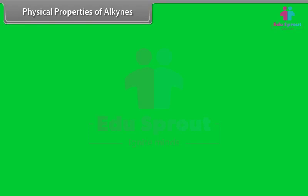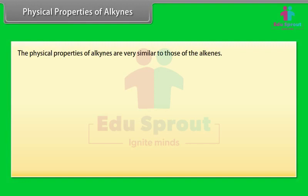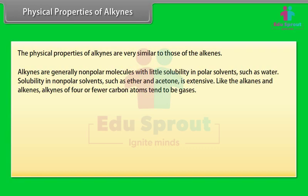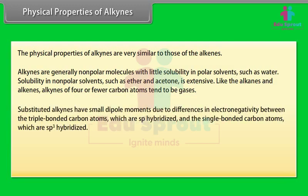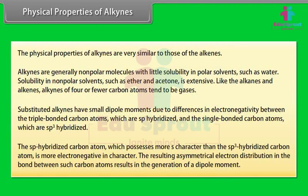Physical Properties of Alkynes: The physical properties of alkynes are very similar to those of alkenes. Alkynes are generally non-polar molecules with little solubility in polar solvents such as water, but extensive solubility in non-polar solvents such as ether and acetone. Like alkanes and alkenes, alkynes of four or fewer carbon atoms tend to be gases. Substituted alkynes have small dipole moments due to differences in electronegativity between the sp-hybridized triple-bonded carbon atoms and the sp3-hybridized single-bonded carbon atoms, since sp-hybridized carbon possesses more s-character and is more electronegative, resulting in an asymmetrical electron distribution and a dipole moment.